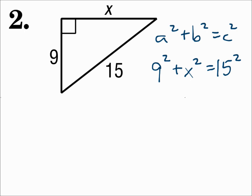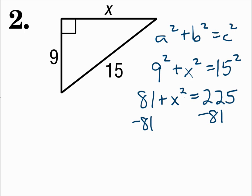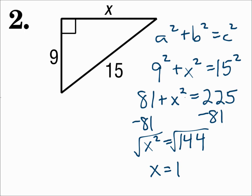Solve for x. 9 squared is 81, and 15 squared is 225. Subtract 81 from each side, and x squared is 144. Square root each side, and x is 12.